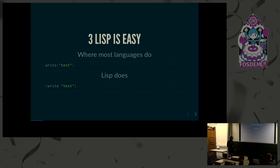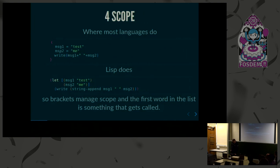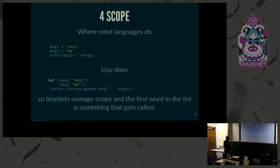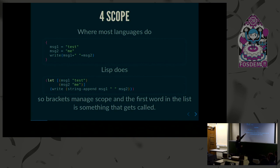In a nutshell: most programming languages write the function name and then braces and then a parameter. In Lisp, the braces are just on the outside - that's all you need to know. When people say there are lots of parentheses in Lisp - meh. Most languages handle scope with curly braces in C-style syntax. In Lisp you write something very similar, it just looks a little bit different. Functions always start at the first position in the brace - that's how they get evaluated - and then you get a list of parameters.